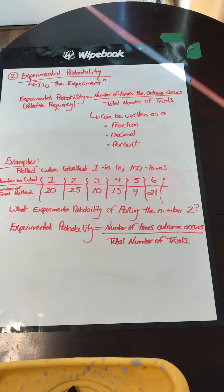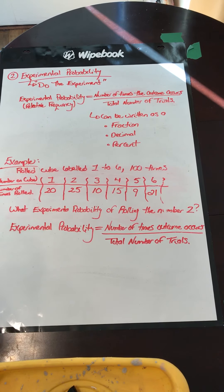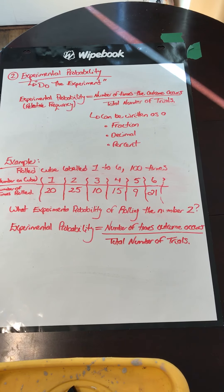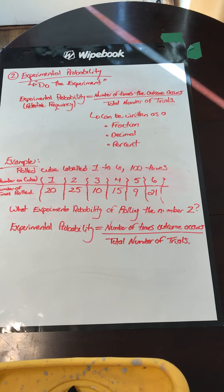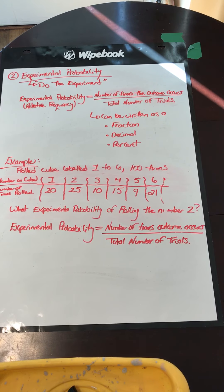The second type of probability we're going to talk about is experimental probability. In this case, you actually do the experiment or the activity. In the previous one, that was in a perfect world — this is what should happen. In experimental probability, we are actually doing the experiment, and we know it is not a perfect world. Experimental probability, sometimes called relative frequency, is the number of times the outcome occurs divided by the total number of trials. It can be written as a fraction, decimal, or percent.